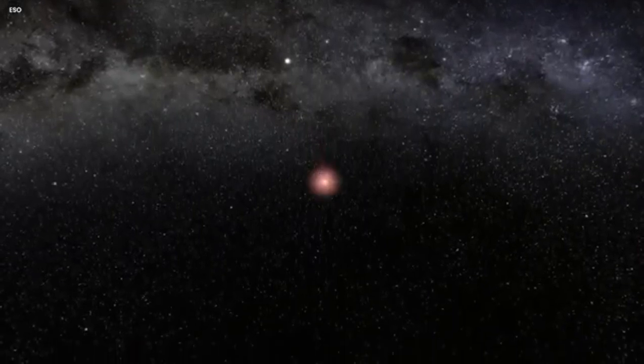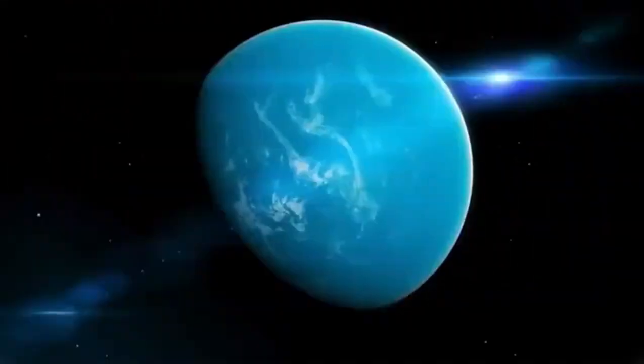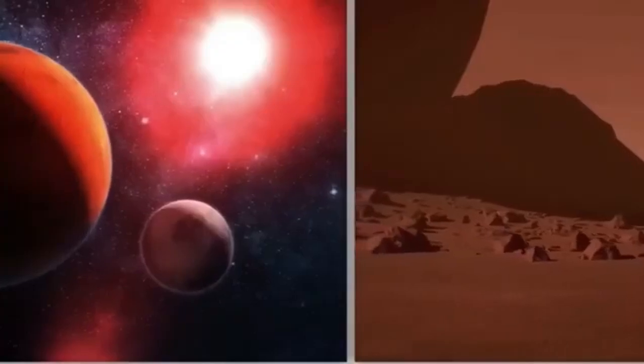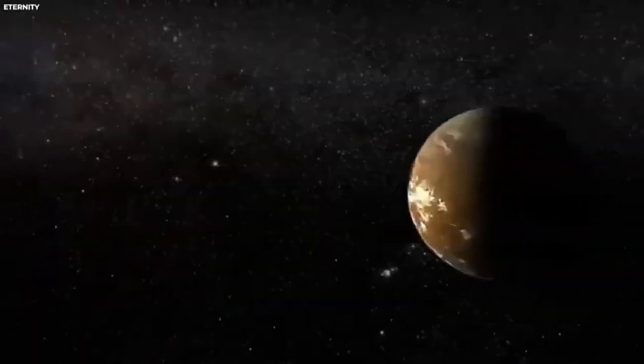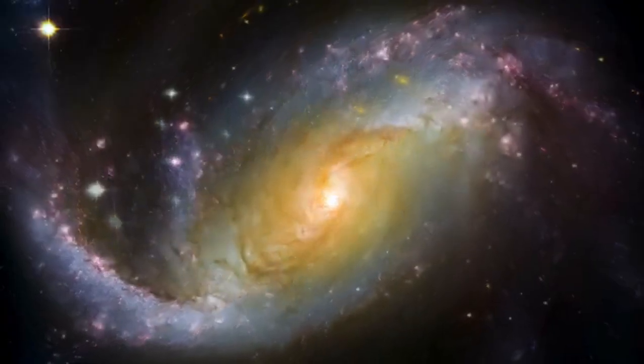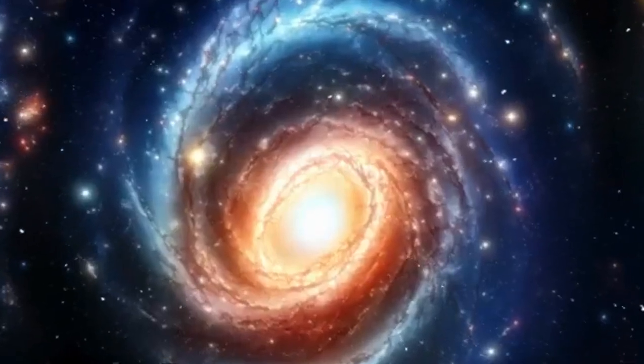Super-Earths are a class of planets that are more massive than Earth, yet lighter than ice giants like Neptune and Uranus. They can be made up of gas, rock, or even a combination of both, and their sizes can vary from twice the size of Earth all the way to ten times its mass. They really put the super in Super-Earth.